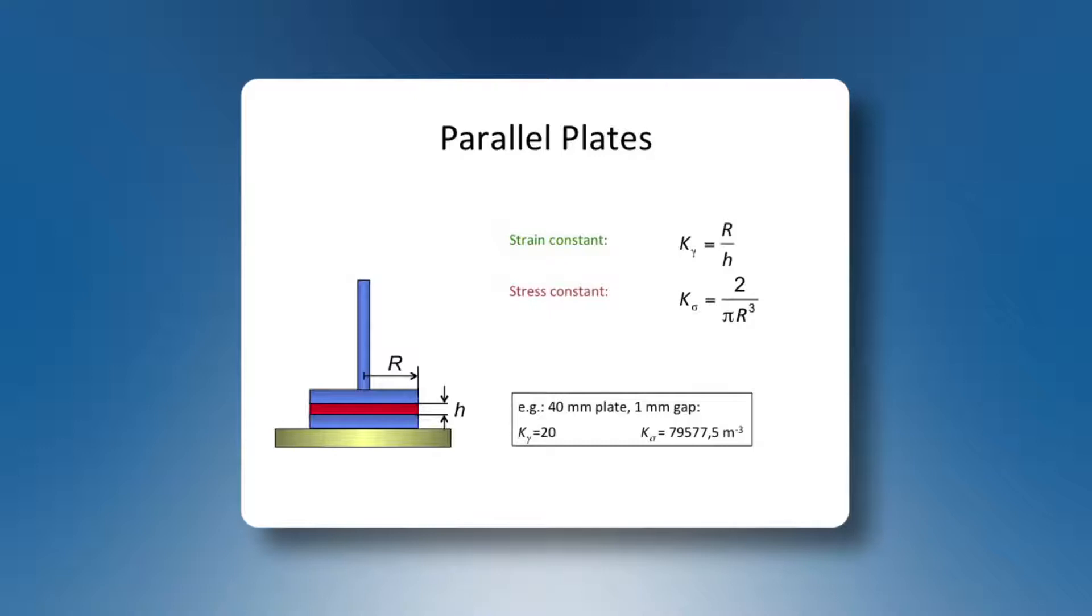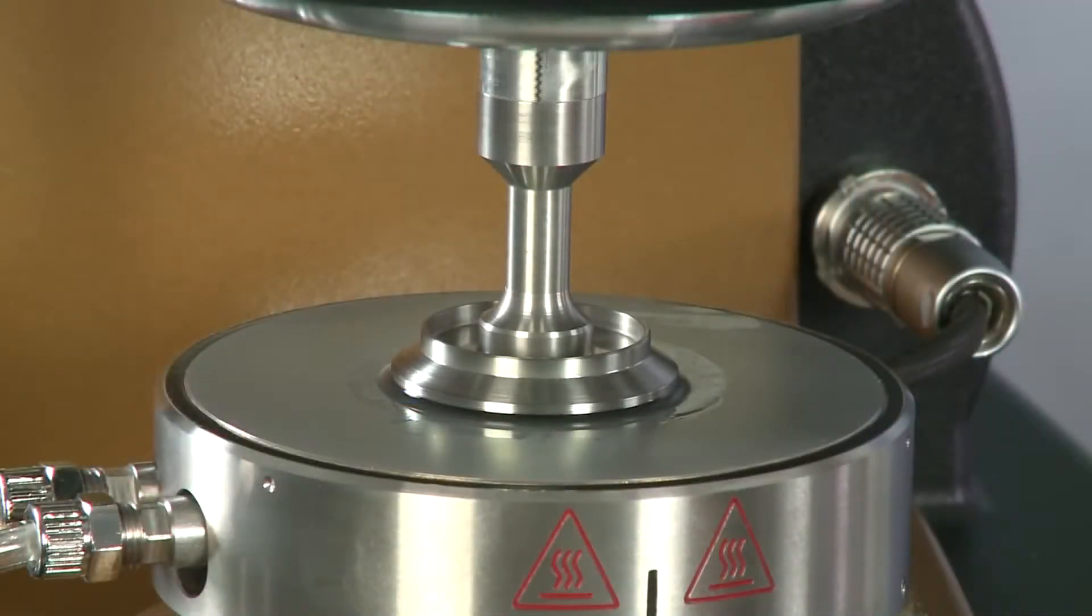An example for a 40 mm diameter plate and 1 mm gap, k gamma will be 20 and k sigma will be about 80,000. I have filled in silicone oil, lowered the plate to a gap of 1 mm, and will now apply a torque of 500 µNm via TRIOS.